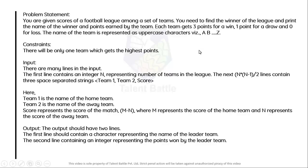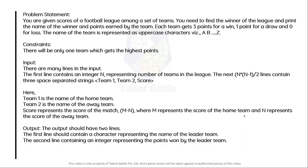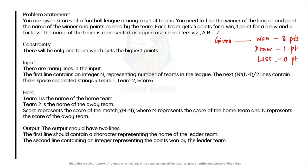The name of the team is represented in uppercase characters, namely A, B, C and so on. When the provided cases are given, identify them: three points for a win, one point for a draw, zero points for a loss. The name of the team will be represented in uppercase characters from A to Z.